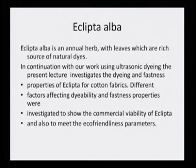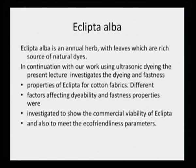Eclipta alba is an annual herb with leaves which are a rich source of natural dyes. In continuation with our work using ultrasonic dyeing, the present lecture investigates the dyeing and fastness properties of eclipta on cotton fabrics. Different factors affecting dyeability and fastness properties were investigated to show the commercial viability of eclipta and also to meet eco-friendliness parameters. We were trying to see whether it befits a dye category.